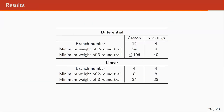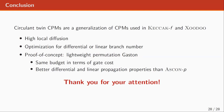Here are the results. For our permutation Gaston, the differential branch number is 12, while for ASCON it is 4. We have the same linear branch number. If we look at the minimum weight of two-round differential trails, for our permutation it is 24, while for ASCON it is 8. In conclusion, we have a circulant twin CPM that generalizes CPM structures, offering high local diffusion and can be optimized for differential or linear branch number. We also provide a proof of concept with the lightweight permutation Gaston, which has the same gate cost as ASCON but with better differential and linear propagation properties.